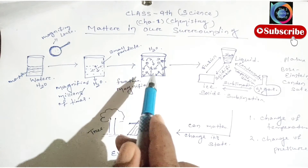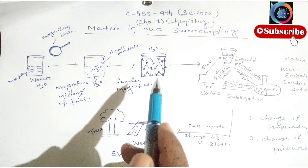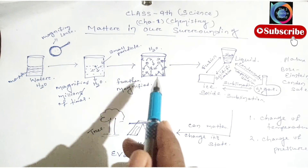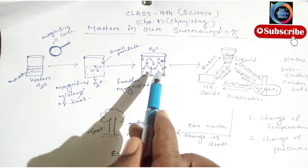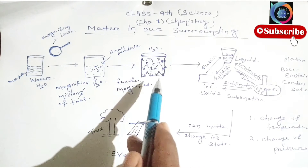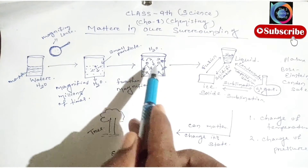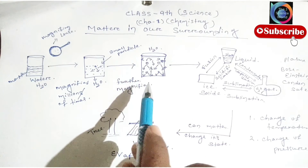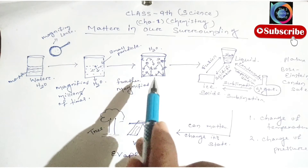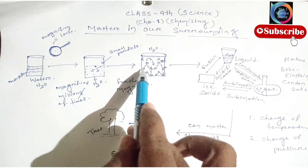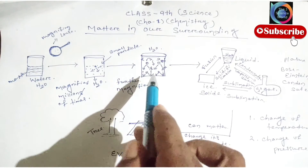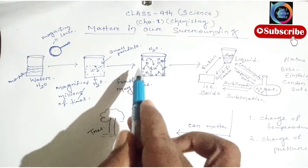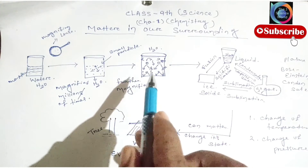When we magnify further, we get a structure that represents the characteristics of particles of matter. First, particles of matter have space between them — you can clearly see these particles have some space between them. Second, particles of matter are continuously moving in random motion. Third, particles of matter attract each other. These particles are attracted to each other — carefully observe this hydrogen atom, they attract to another hydrogen atom, creating a bond called a hydrogen bond.